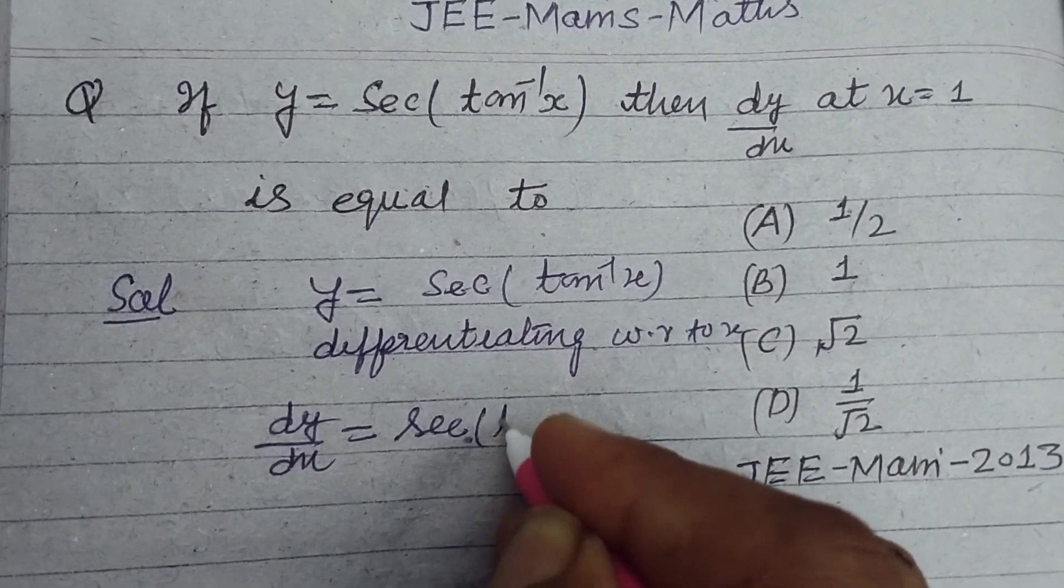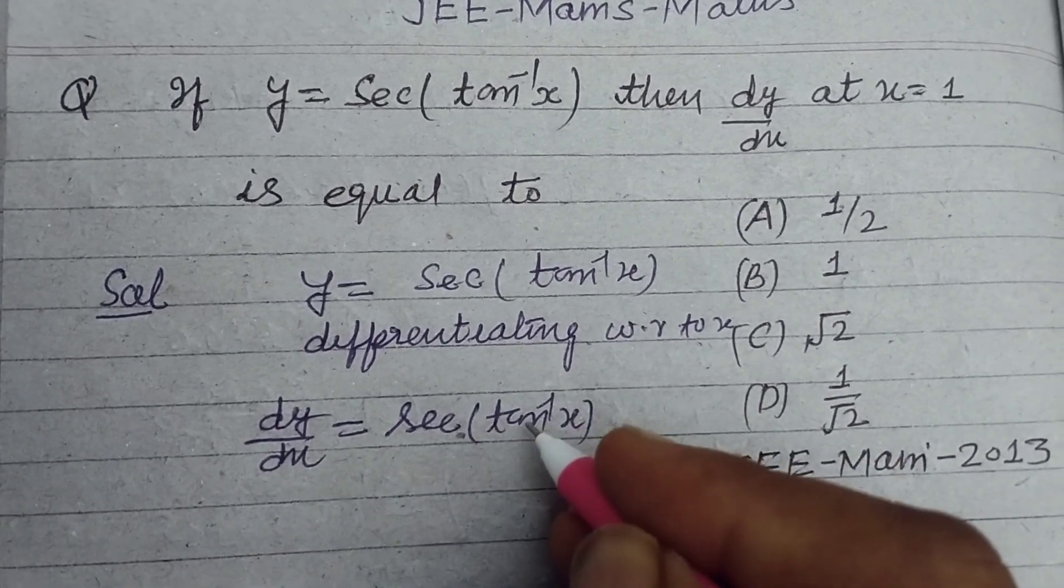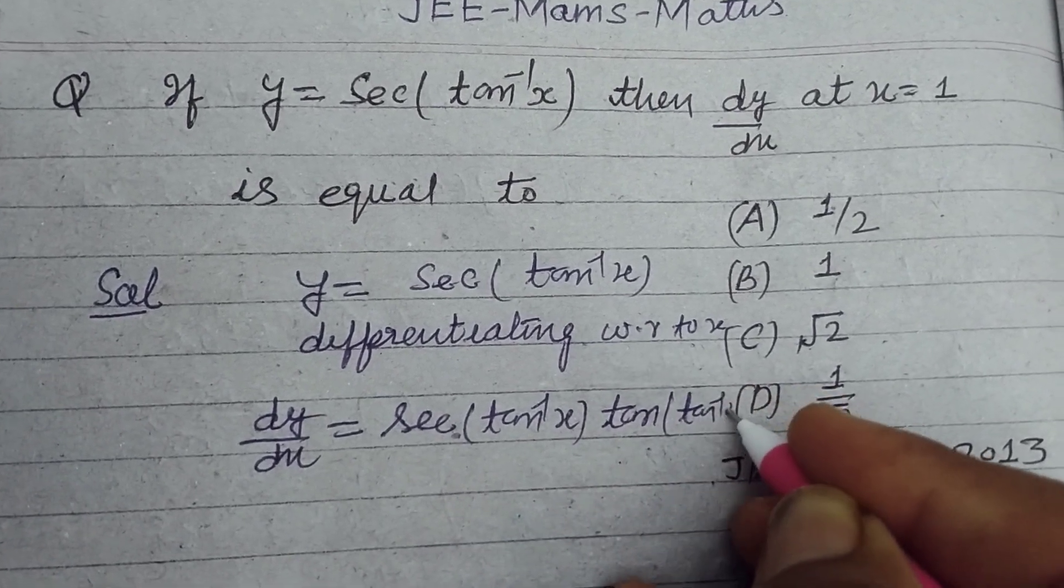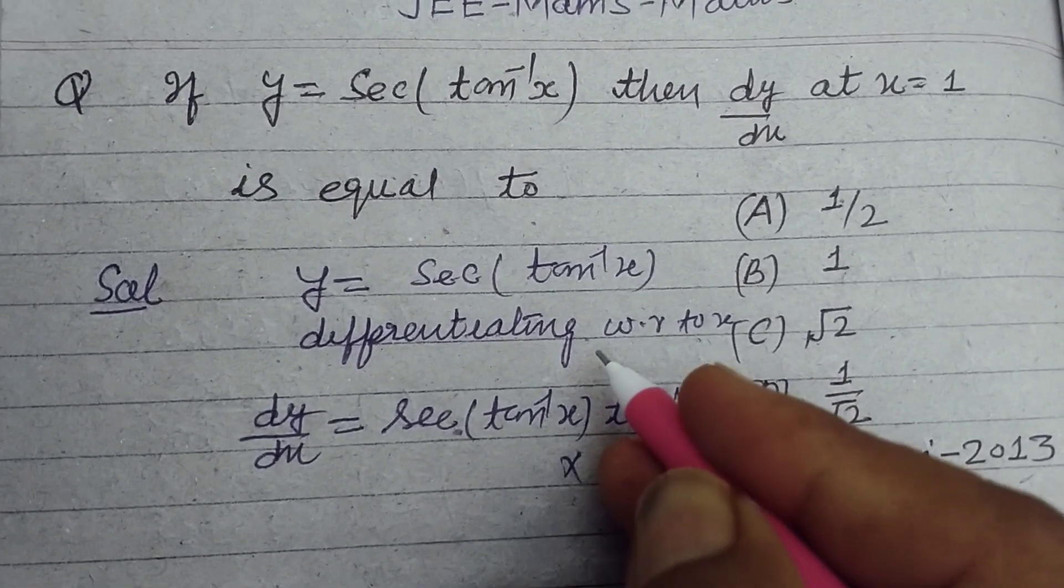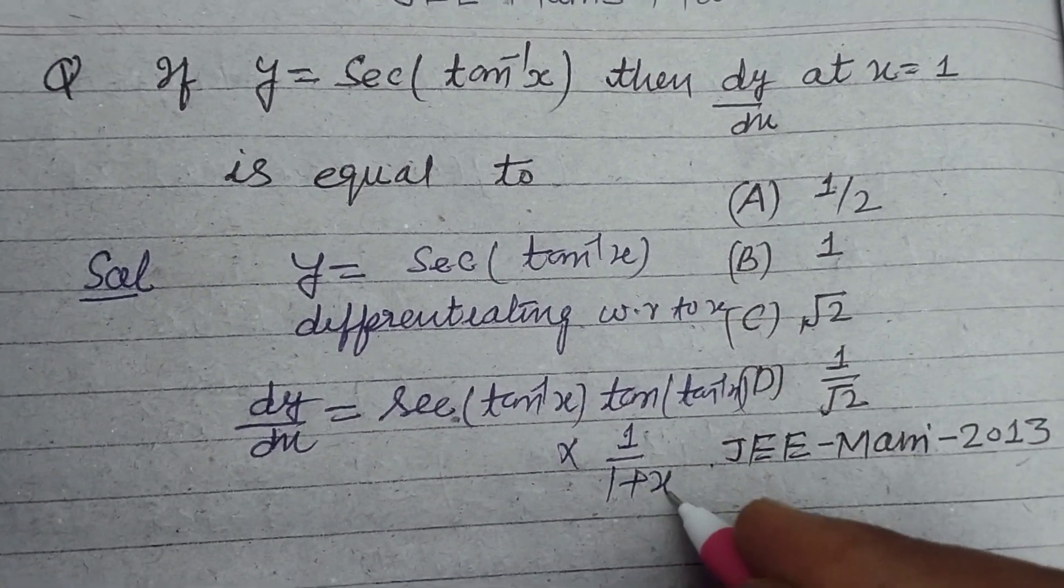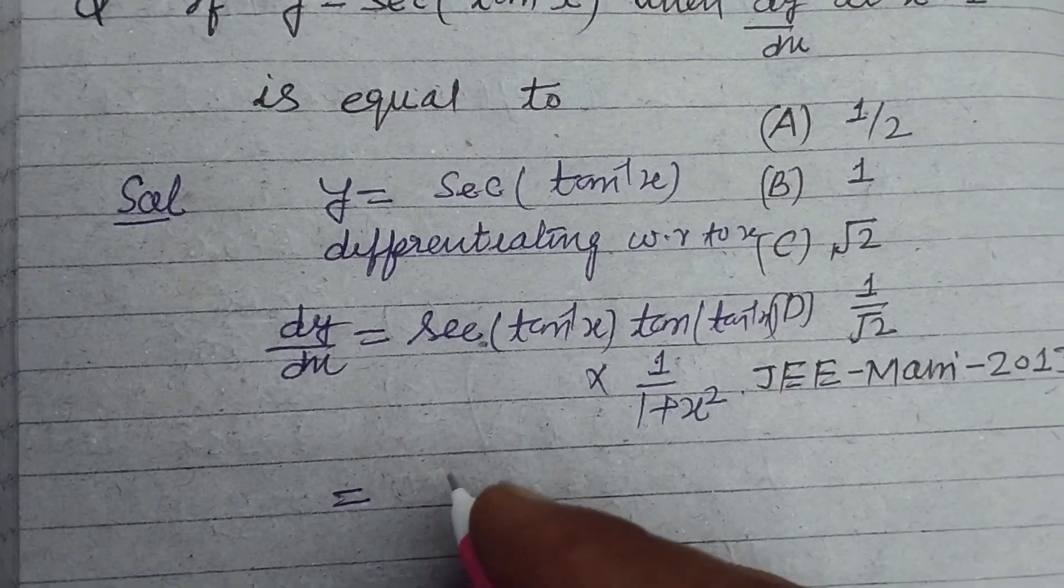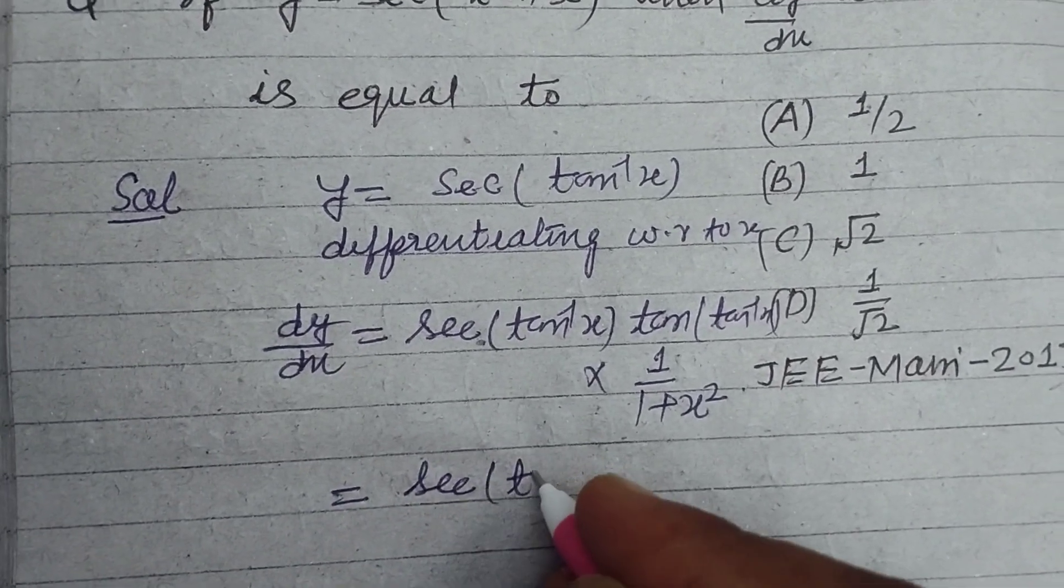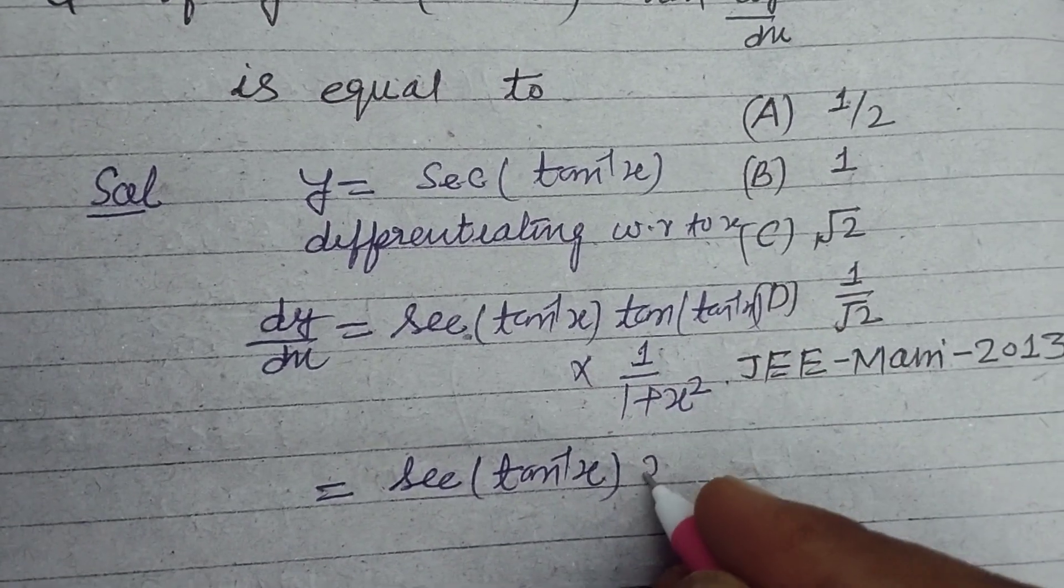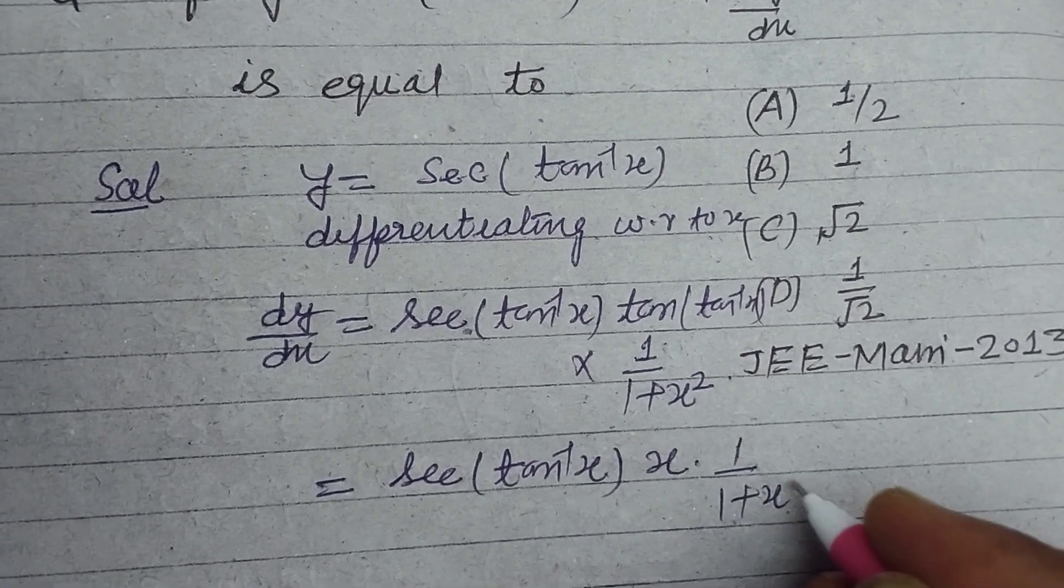The differentiation of sec x is sec x tan x, so sec(tan inverse x) times tan(tan inverse x), now differentiation of tan inverse x is 1 upon 1 plus x squared. Therefore sec(tan inverse x) tan(tan inverse x) is x into 1 upon 1 plus x squared.